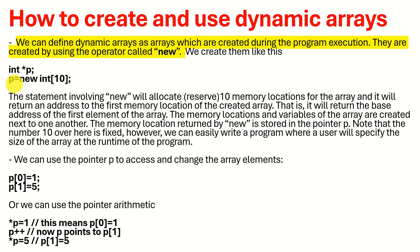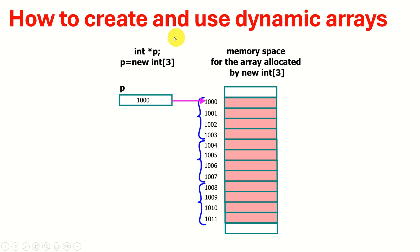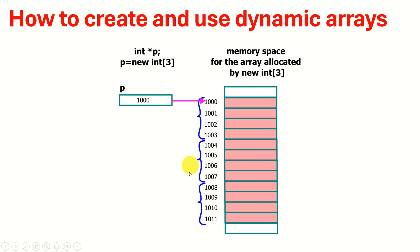Note that the number 10 here is fixed. However, we can easily write a program where a user will specify the size of the array at run time. Here is a small sketch that illustrates the usage of new. First, we create a pointer to an integer. Then, when we type p = new int[3], memory space is allocated for the array, represented by the shaded region.